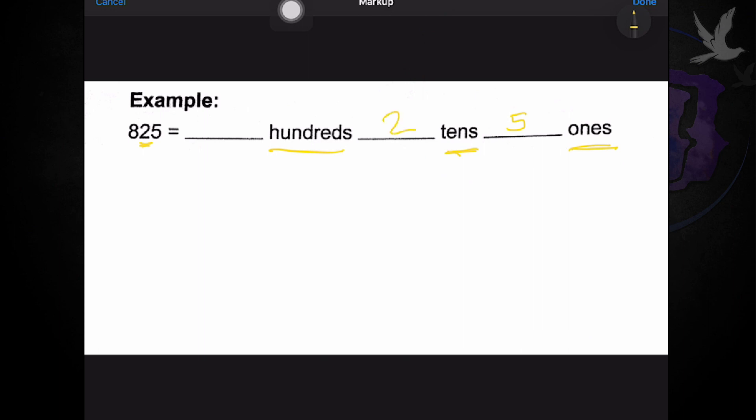And for the next place value, which is hundreds, we have eight. So, that is basically how you identify the value for each place value, the digit for each place value.